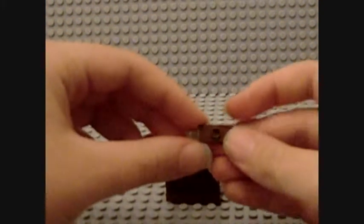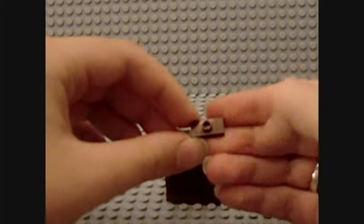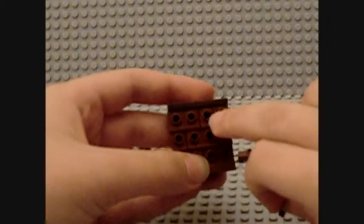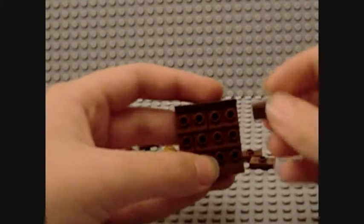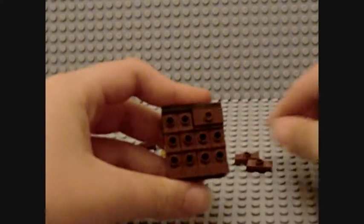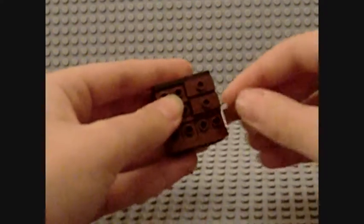Now you're going to need to get these 2x1s that have this little stud in the middle, and you're just going to need to stick these over 2 of these bricks like that. Do that for the rest of them, so you're going to end up with 6 of those on there.